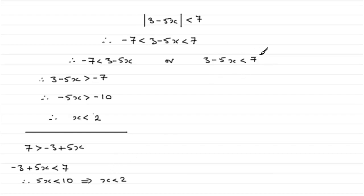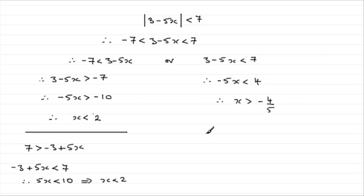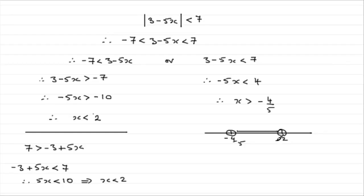Solving the second inequality: subtracting 3 from both sides gives minus 5x is less than 7 take away 3, which is 4. Dividing both sides by negative 5 means we reverse the inequality, so we end up with x being greater than 4 divided by minus 5, which is minus 4 fifths. Looking at a number line: we've got minus 4 fifths and 2. We've got to be greater than minus 4 fifths but at the same time less than 2. So x lies between minus 4 fifths and 2.